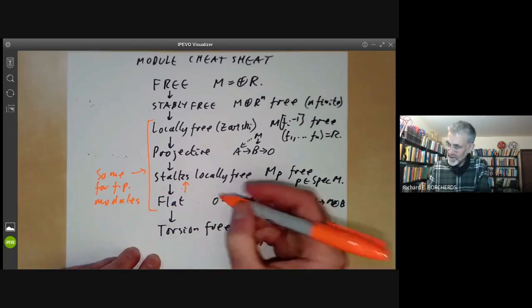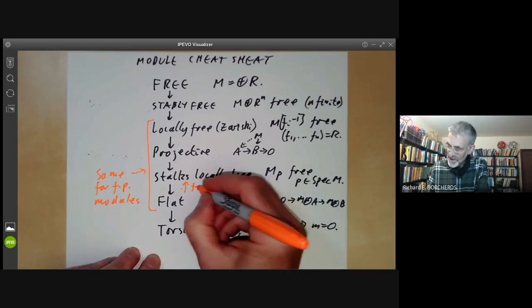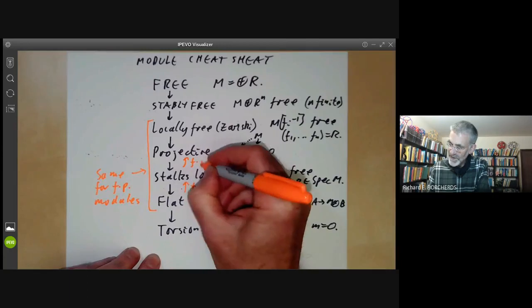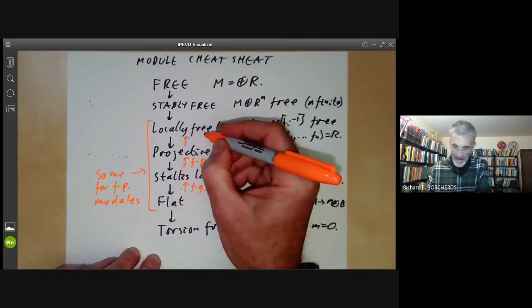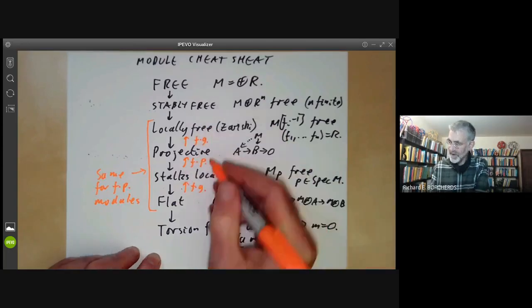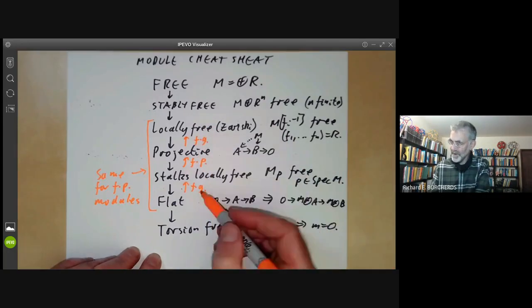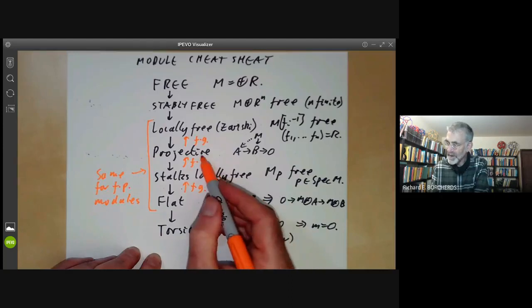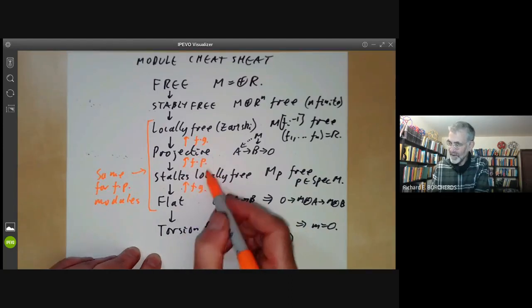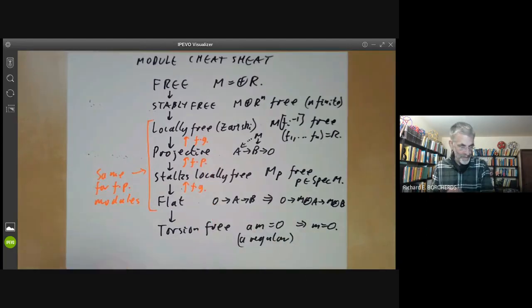Flat implies stalks locally free for finitely generated modules. That implies projective for finitely presented modules. And that implies locally free for finitely generated modules. Notice that here we have finitely generated modules and here we have the slightly stronger condition that the module has to be finitely presented. And this actually fails for finitely generated modules.